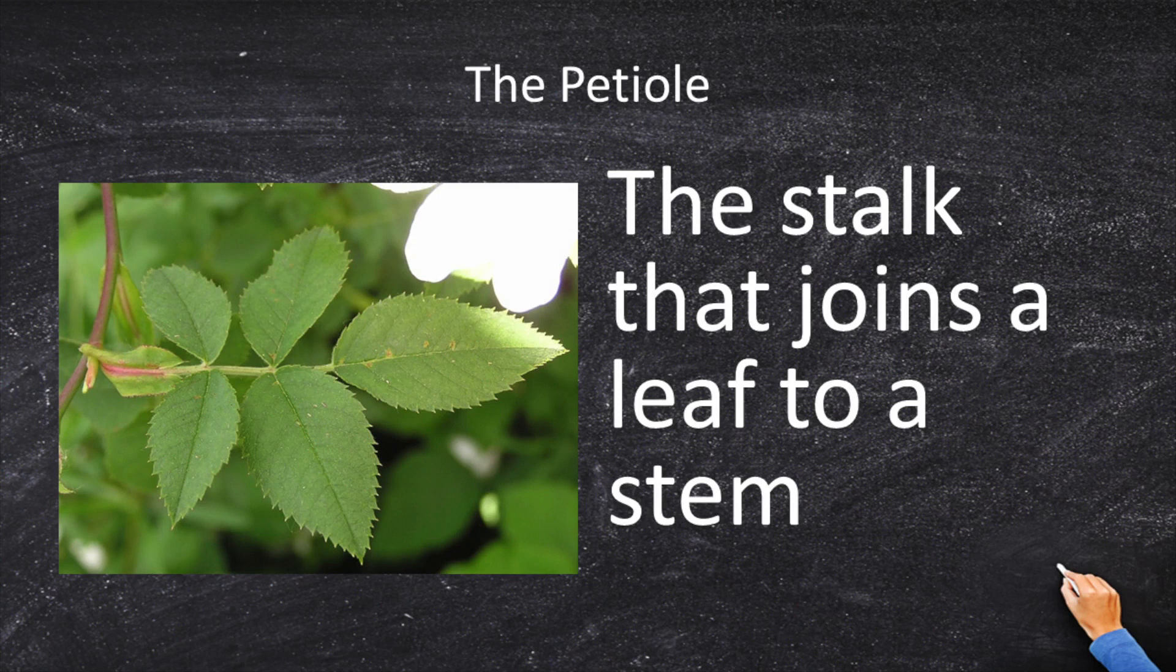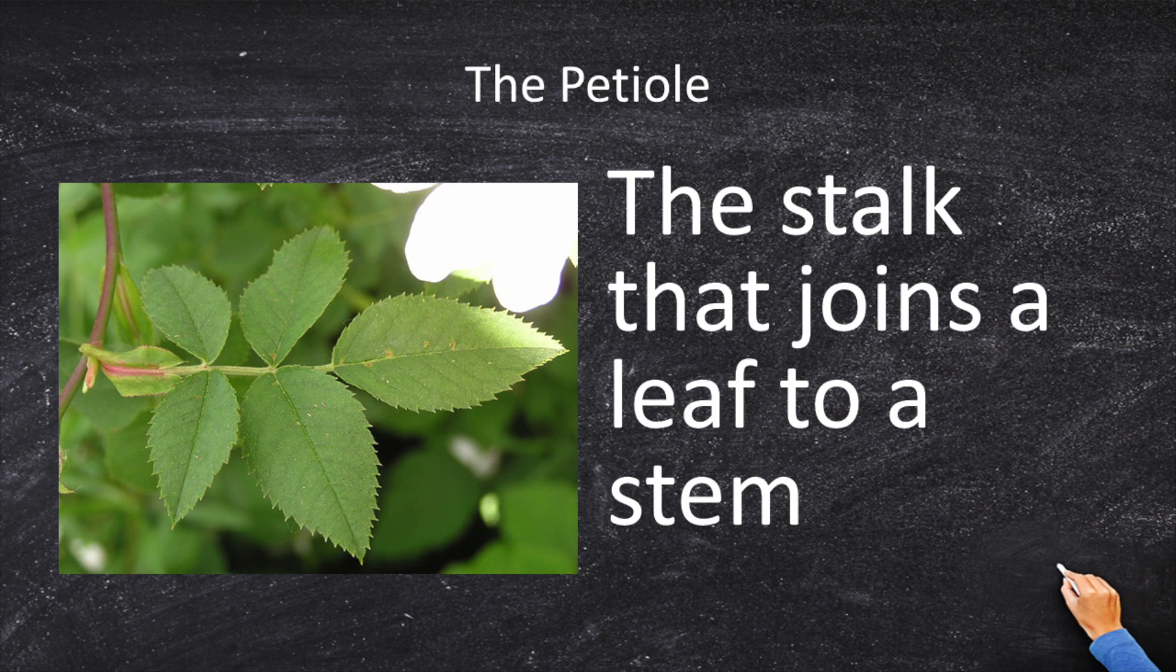Next, petiole. Probably not pronouncing that right, but we'll go with it. Petiole, the stalk that joins a leaf to a stem. The stalk that joins a leaf to a stem. So the stem is the big thick piece of wood. And the thing that connects the big piece of wood, the stem, to the leaf is called the petiole. Sounds like Italian.